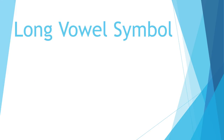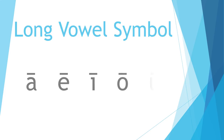The long vowel symbol is a straight line above the vowel. Just as the short vowel symbol is, this symbol is used when spelling a word phonetically, meaning as it sounds. This is normally found in the dictionary. The long vowel sounds are: A, E, I, O, U.